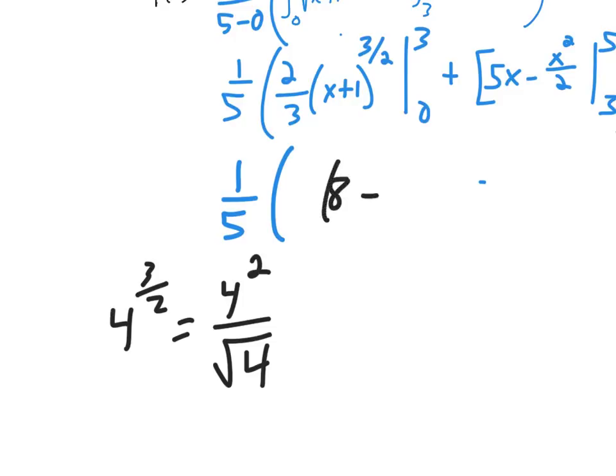And so we're supposed to subtract from that what happens when you plug in 0. I plugged in 3. Now if I plug in 0, 0 plus 1 is 1. 1 to the 3 halves is 1, times 2 thirds is 2 thirds. So there's that integration in black.